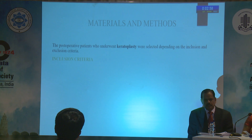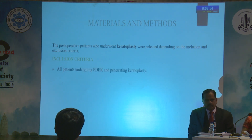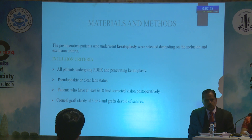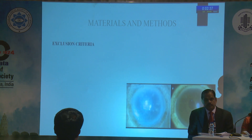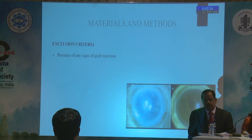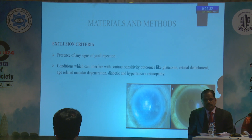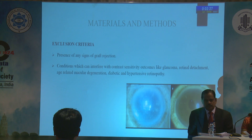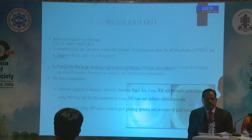For materials and methods, postoperative patients who underwent keratoplasty were selected depending on the inclusion and exclusion criteria. All patients doing PDEC and penetrating keratoplasty should be pseudophakic or clear lens status. Patients with at least 6/18 best corrected vision postoperatively and corneal graft clarity of at least grade 3 or 4, with grafts devoid of sutures, were included. The exclusion criteria included any signs of graft rejection, and factors which can affect contrast sensitivity such as glaucoma, retinal detachment, diabetic or hypertensive retinopathy, and ARMD.